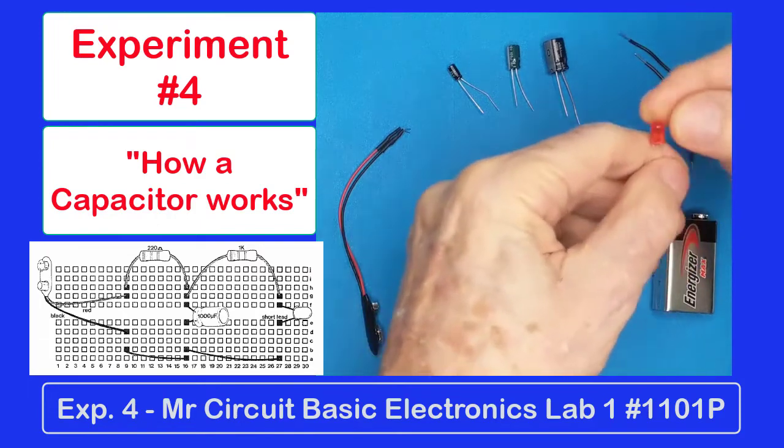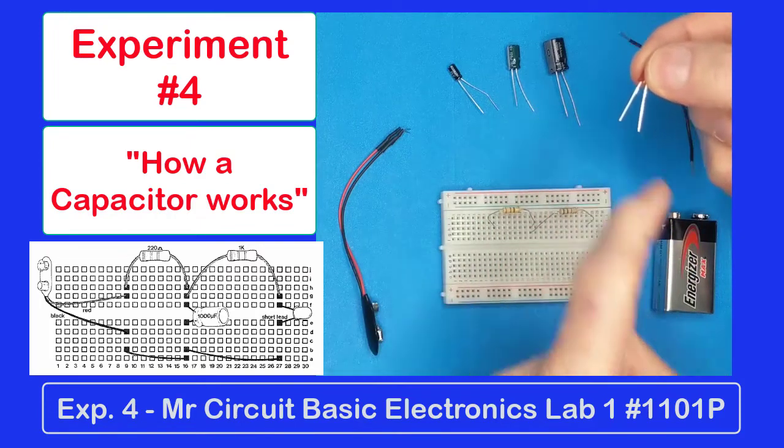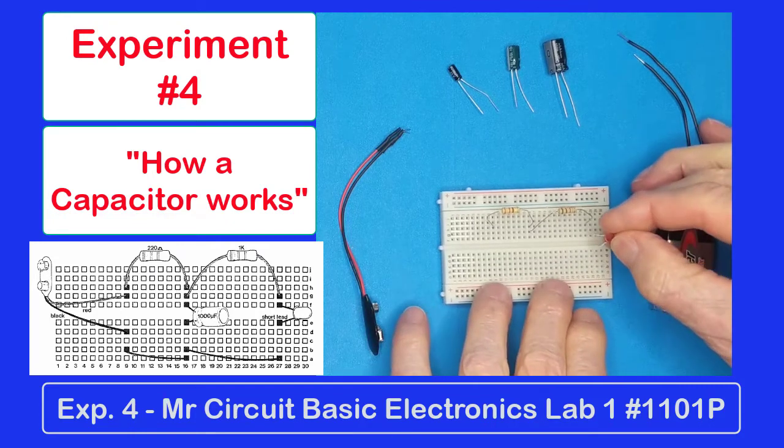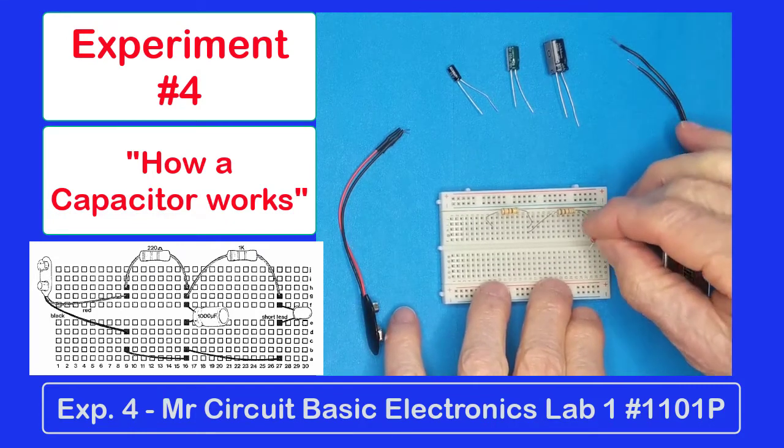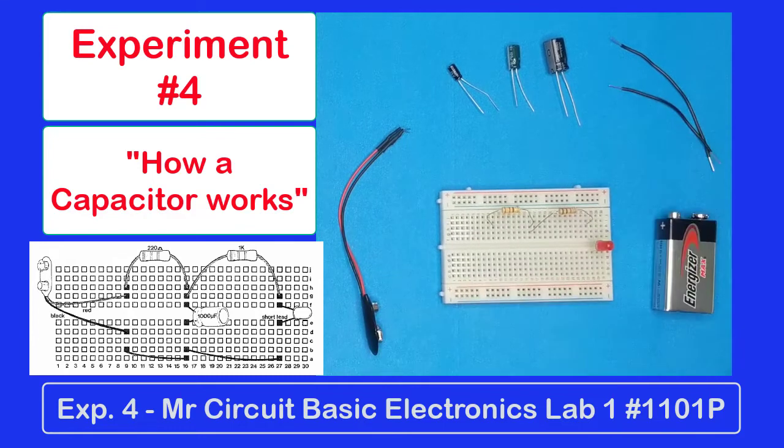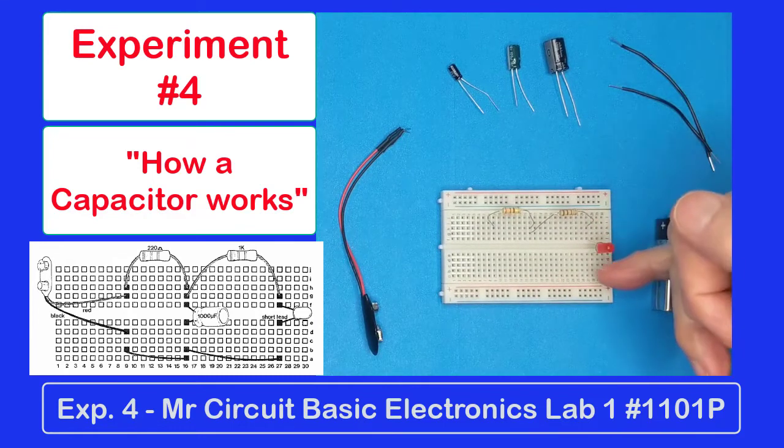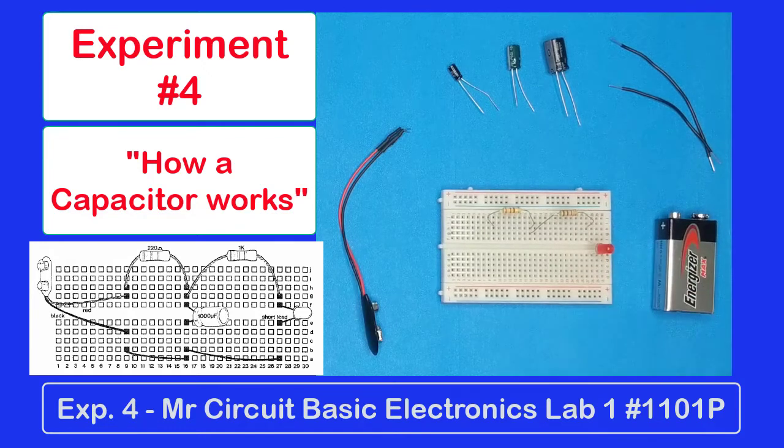Now pick up your LED. Notice that you have a short lead and a long lead. The short lead I want to take across the channel here. So I'm going to plug it in right here across this channel. So it's connected on one side to the 1,000 ohm resistor and the other one is connected down here to row 27.